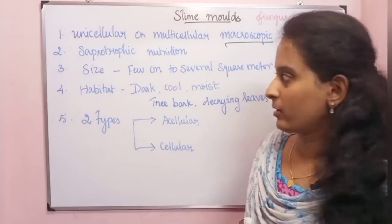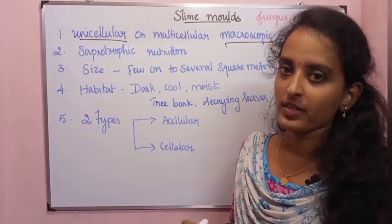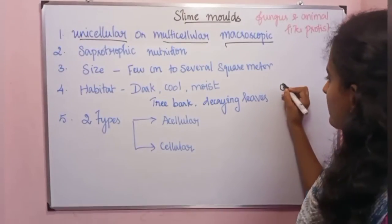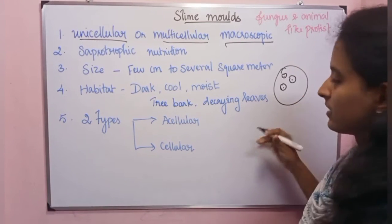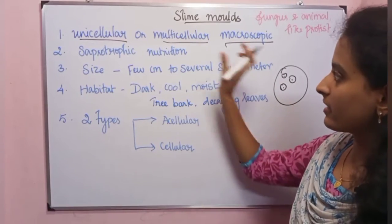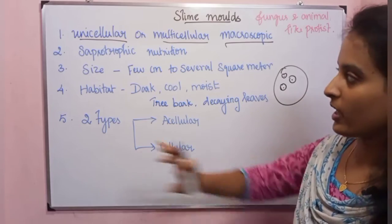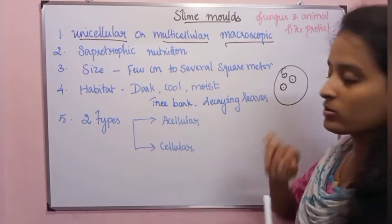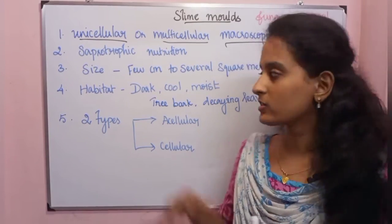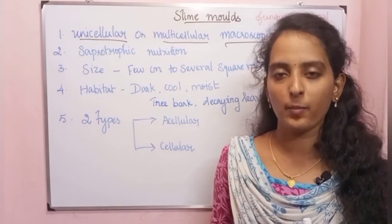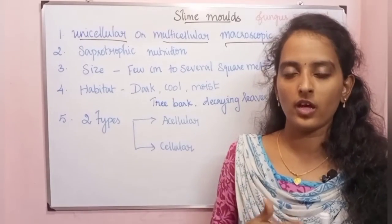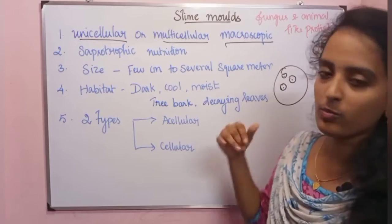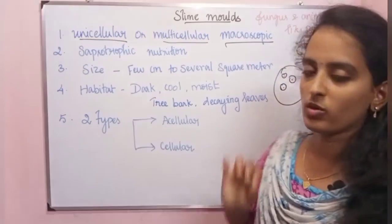Slime molds can be unicellular or multicellular. The first key characteristic is that they are macroscopic eukaryotic organisms. Unlike most protists which are microscopic, slime molds are macroscopic. They can exist as unicellular or multicellular forms, and are multi-nucleate.